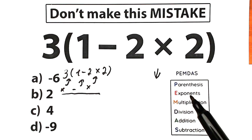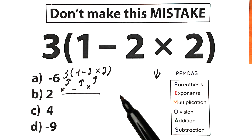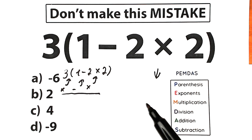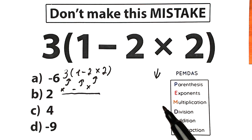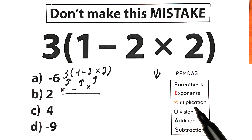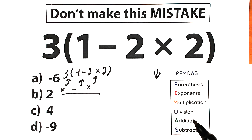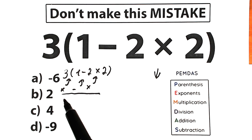Next is exponents — like 2 squared or 2 cubed. Next is the multiplication and division group, and the last step is addition and subtraction.